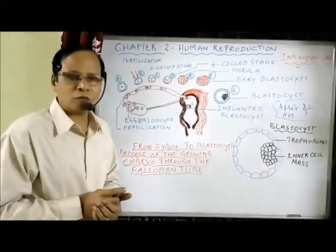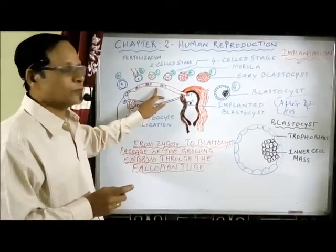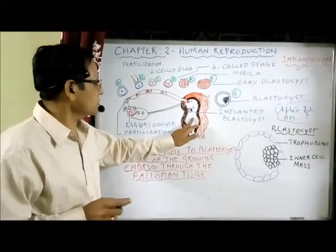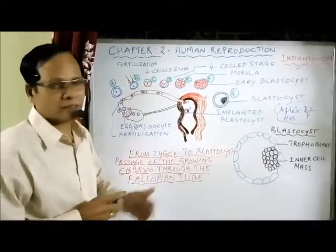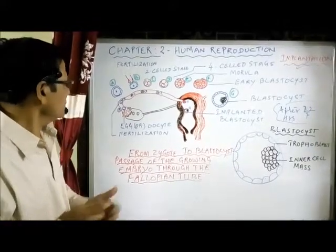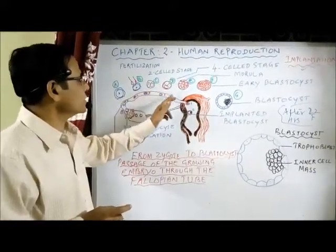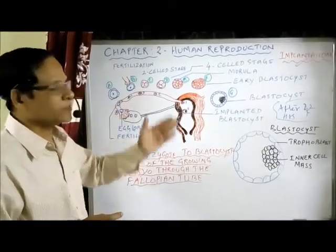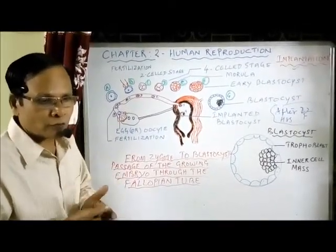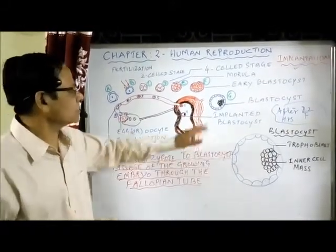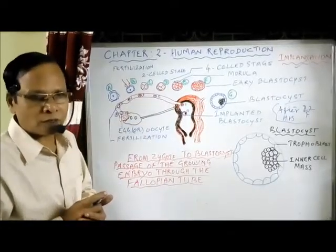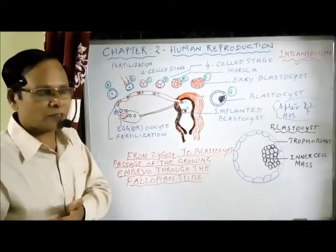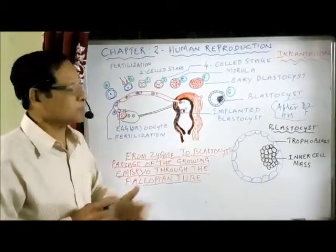Under the influence of the hormone progesterone, the fallopian tube relaxes and the dividing embryo takes about 4 to 5 days to reach the uterine cavity. The stages are: 2-cell, 4-cell, 8-cell, morula, and early blastocyst. At the end of these divisions, a fluid-filled hollow ball of about 100 cells is formed, called the blastocyst — not blastula, which applies to other animals.